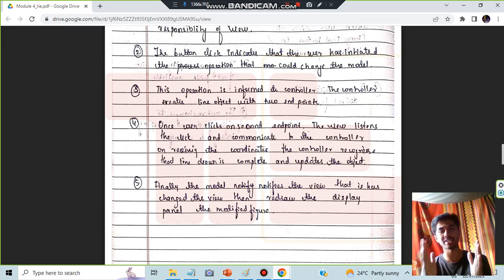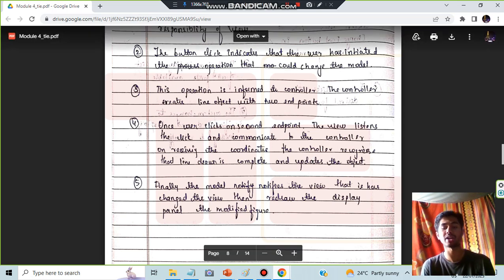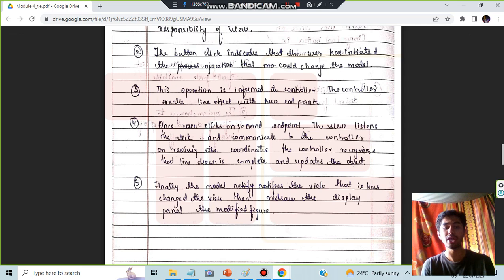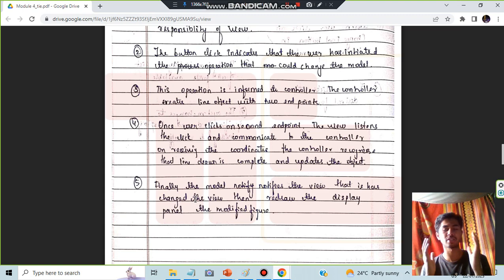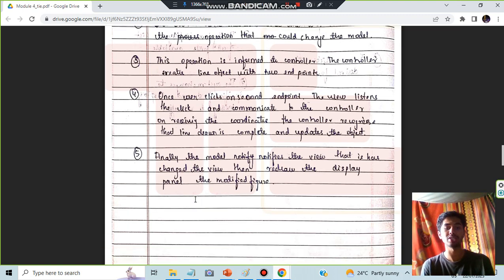After that line is drawn, after the controller gives a thumbs up, it will be drawn and then the actual model modifies the view and that it has changed the view and redrawn the line panel in the modified figure. So the redrawn line is shown in the view finally. So after writing these five points, after all this simple diagram...